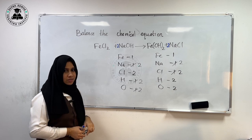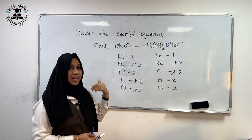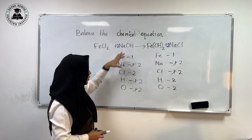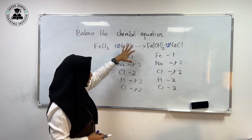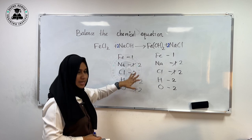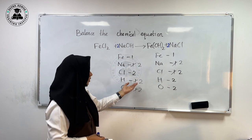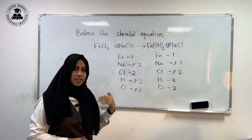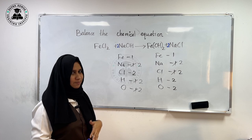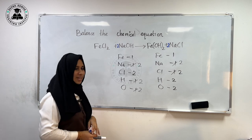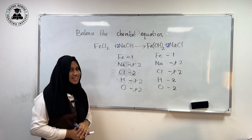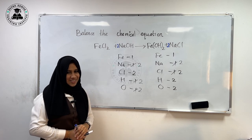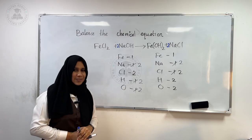Is that clear to you? This is how we balance a chemical reaction. When you do the initial ones, sometimes hydrogen and oxygen also get balanced during that process. It is very easy to balance a chemical reaction — just follow this order. Thank you.